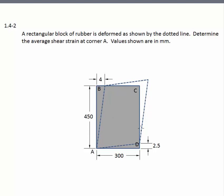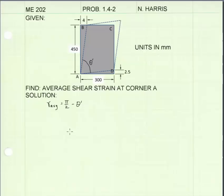The gray block represents the original block of rubber. The dotted line is the deformed shape. We want to find the average shear strain here at corner A. The equation for calculating average shear strain is gamma average equals pi halves minus theta prime. Corner A, the original angle, was pi halves.